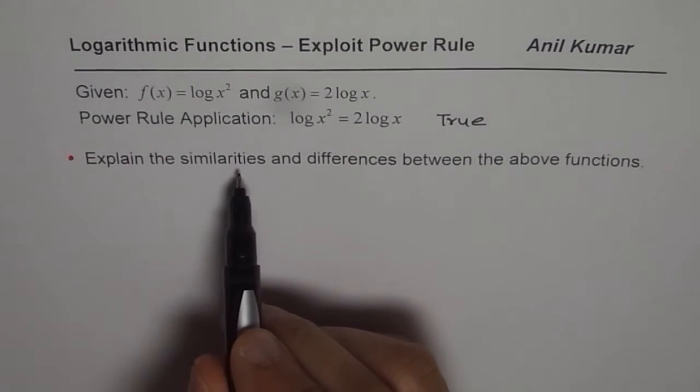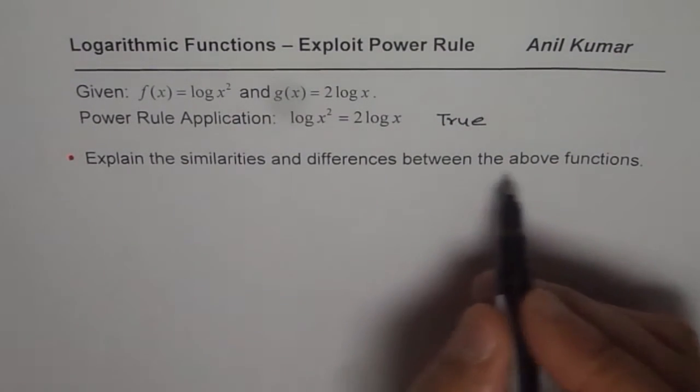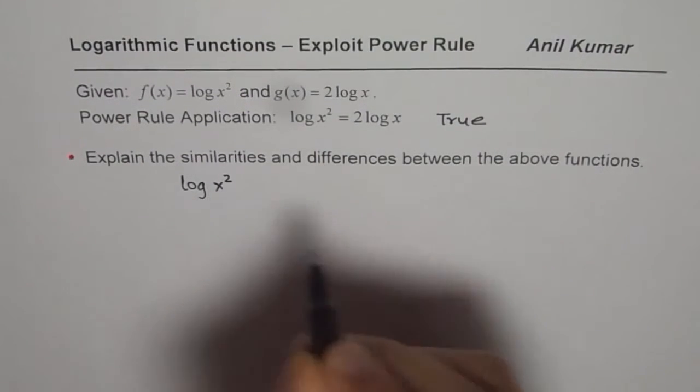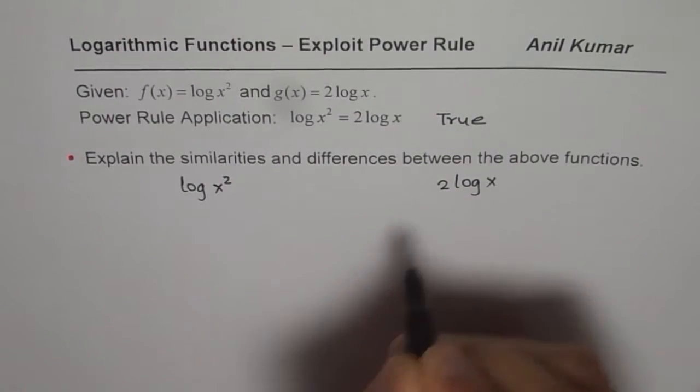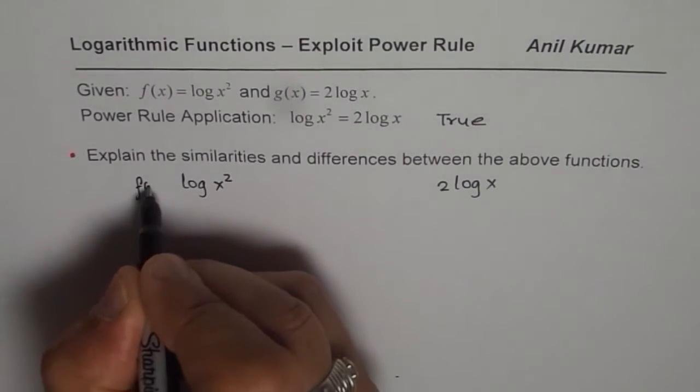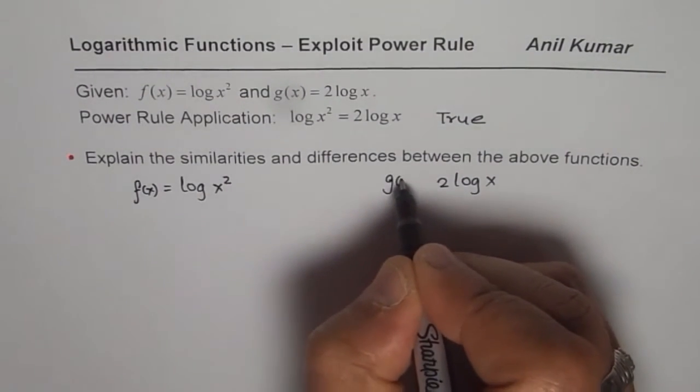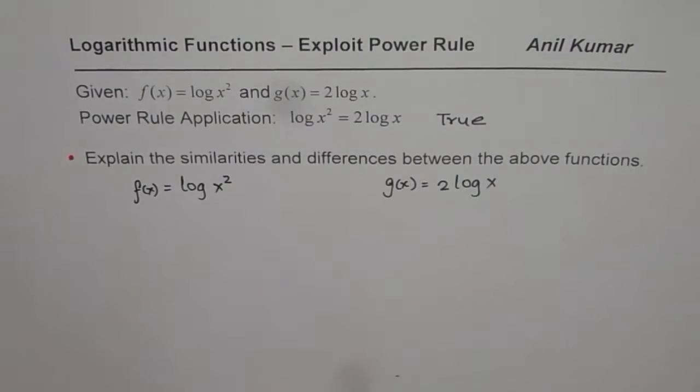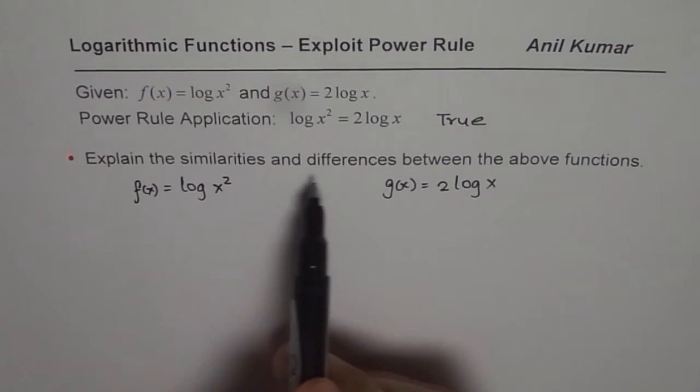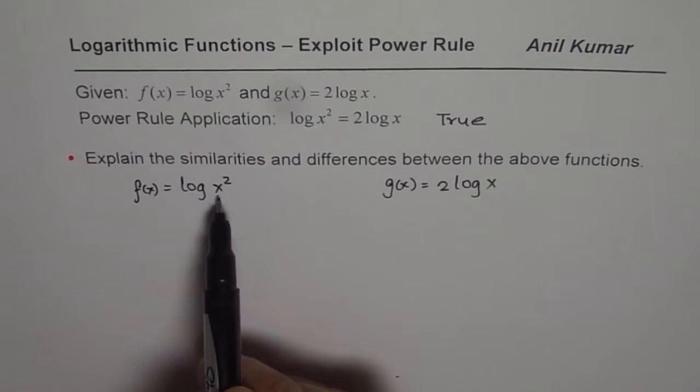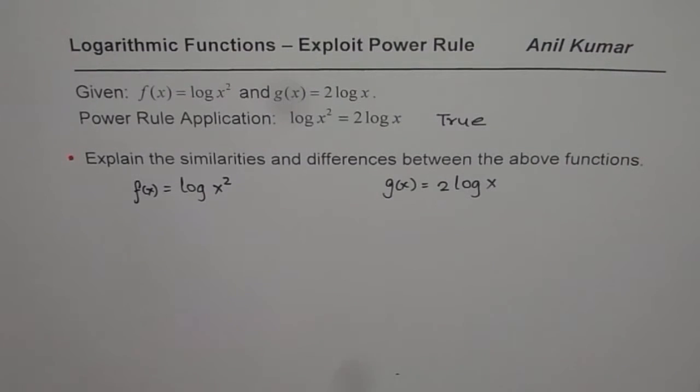And let me know what are your views about it. Now the question is, explain the similarities and differences between the above functions. Above functions mean, here we are talking about log of x squared and 2 times log of x. So now my question is, are they exactly same functions? Are they different functions? How are they really related? So I'm not debating whether this is true or false, I'm saying it is true. And now my question is, explain the similarities and differences between these two functions, where f of x equals log x squared and g of x equals 2 times log x.